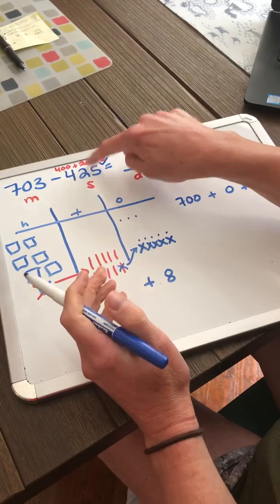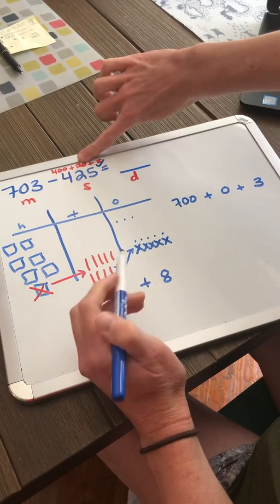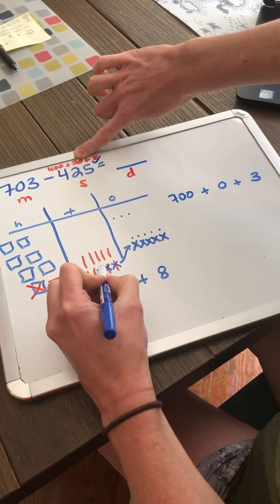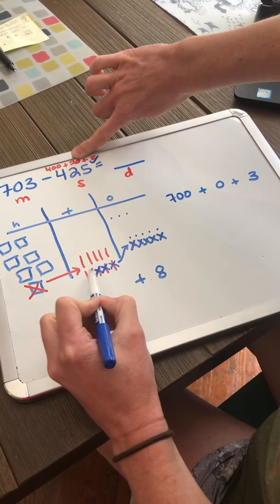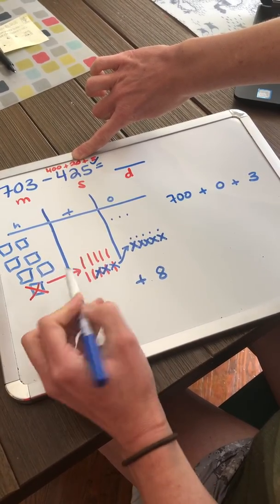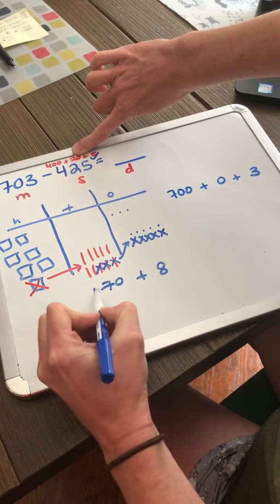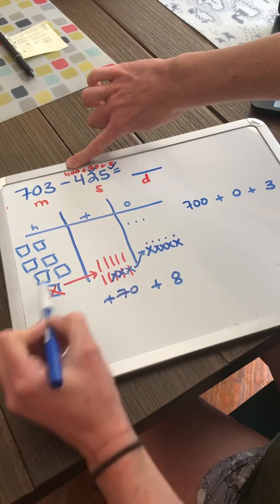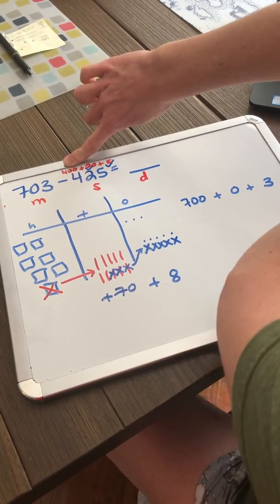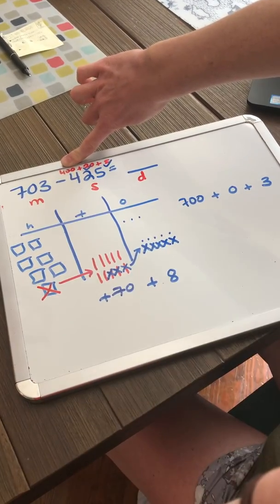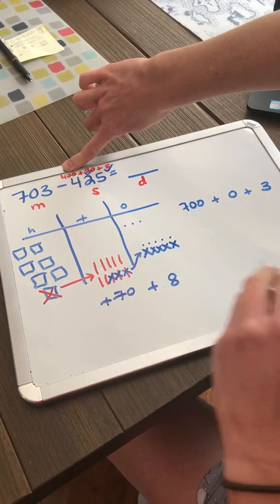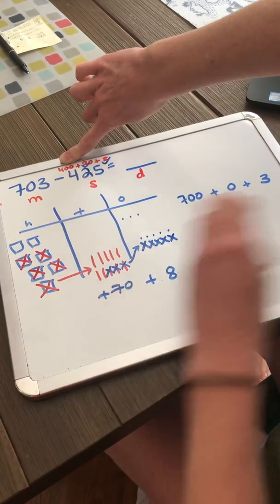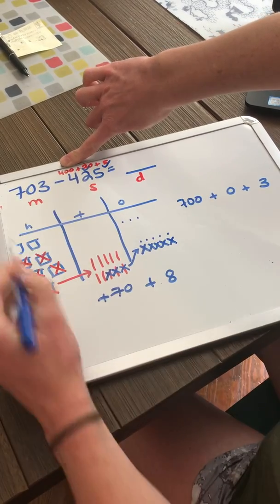Now I need to take away 2 tens, or 20. I just can't count the one I already borrowed. So taking away 10, 20, I have 10, 20, 30, 40, 50, 60, 70 left over. Last, I need to take away 400. I can't count that 100 because I already borrowed it and exchanged it for 10 tens. So taking away 100, 200, 300, 400, I am left with 200.